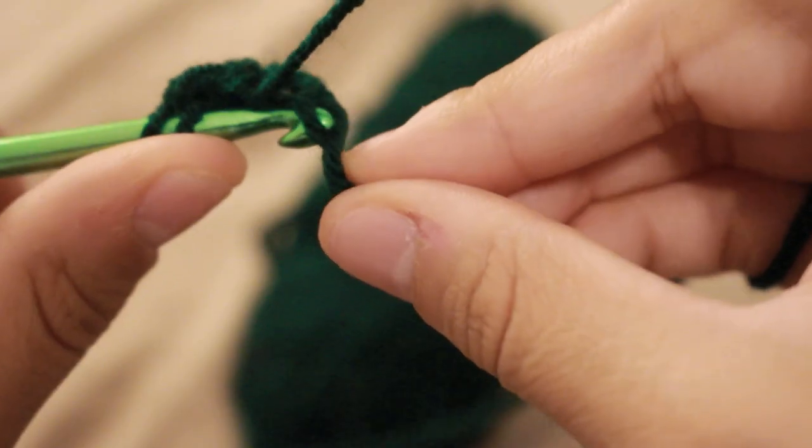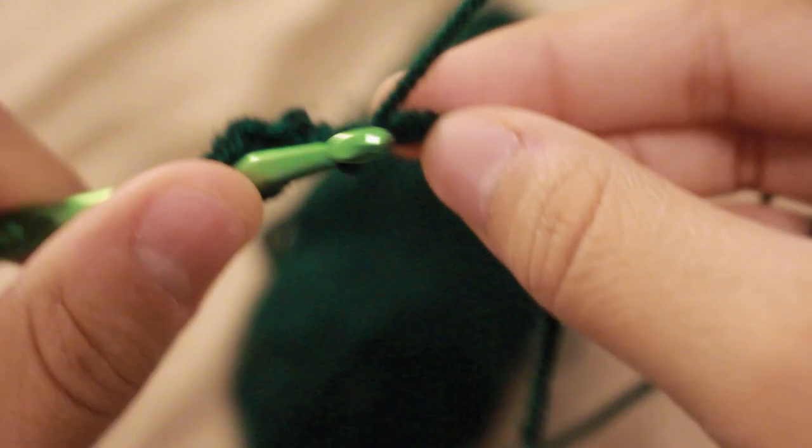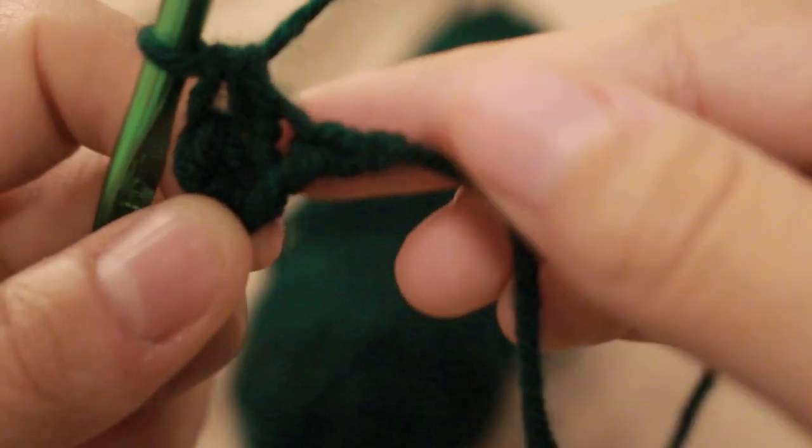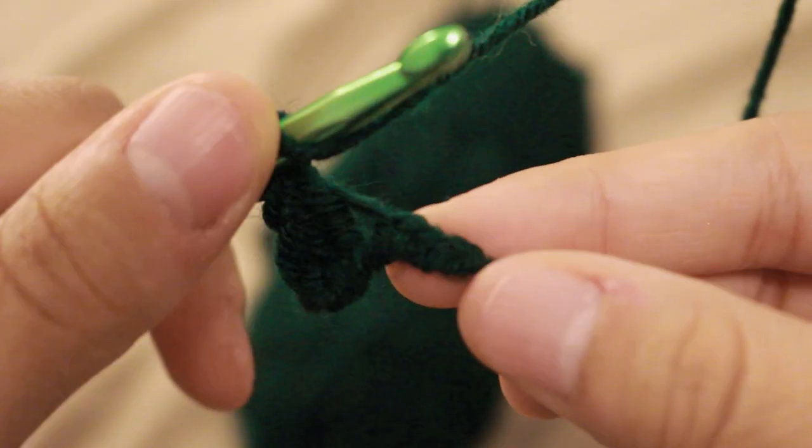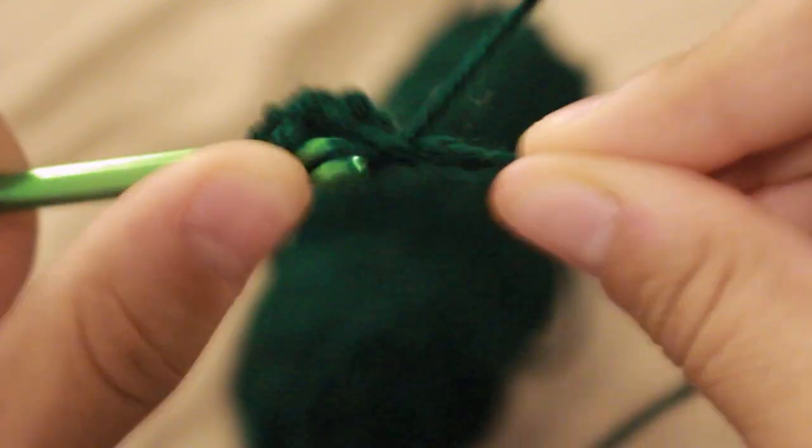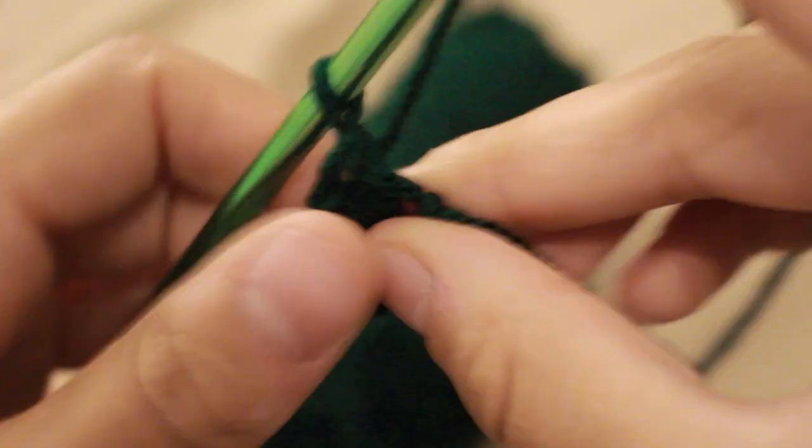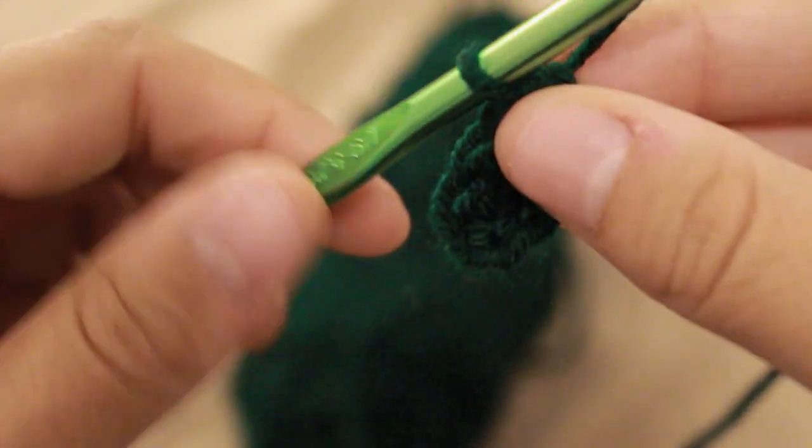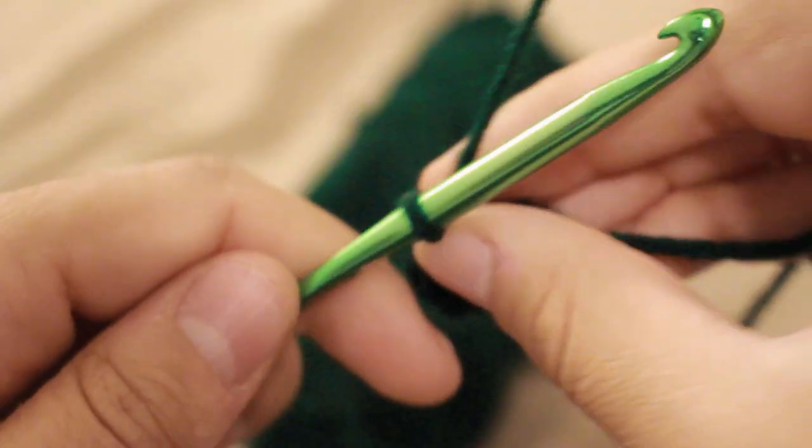To get three stitches on this first row, you're going to insert your hook, not in the first chain that you see there, but the second chain. This will ensure that you only have two more spaces left at the end, so that will thus create the three stitches that you need. At the end of that row, you're going to chain one and turn your work.